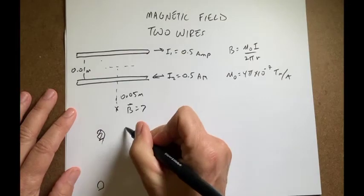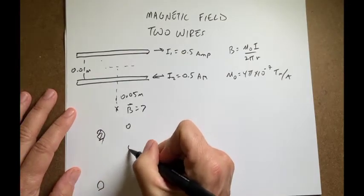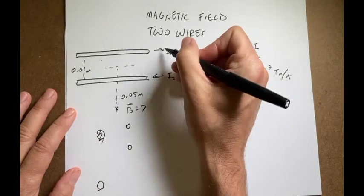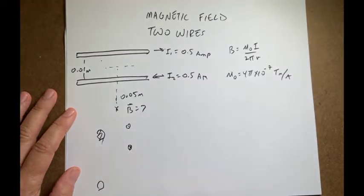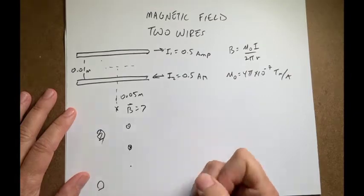Maybe I should draw a little smaller. Let's draw it like right there and right there. So this is the current coming out of the paper. So I'm going to put a little dot right there. And this one is the current going into the paper right there. And I want to find the magnetic field down here.